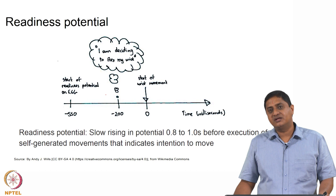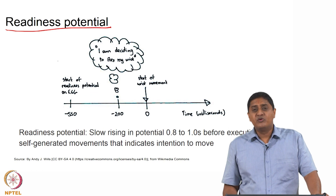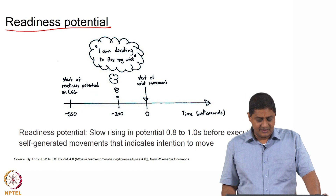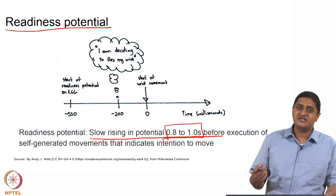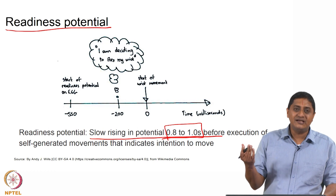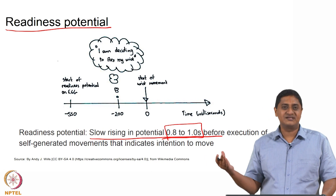An important concept in understanding movement is the notion of readiness potential. If a movement is performed by intention, the readiness potential is a slow rising potential occurring about 0.8 to 1 second before the execution of self-generated, self-initiated, intentional voluntary movements. One second is a long time in neuronal terms — we have been talking in the order of tens of milliseconds, from 30ms for monosynaptic reflexes up to about 200 milliseconds for voluntary reactions.